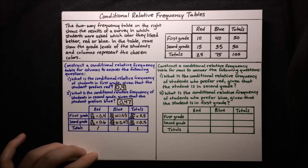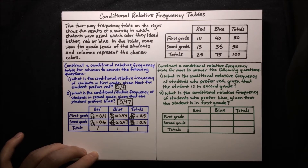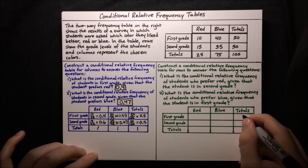Moving on to the next exercise: construct a conditional relative frequency table for rows to answer the following questions. First, what is the conditional relative frequency of students who prefer red, given that the student is in second grade? And second, what is the conditional relative frequency of students who prefer blue, given that the student is in first grade? A conditional relative frequency table for rows is very similar to one for columns. The only difference is that instead of column totals being one, the row totals should be one.